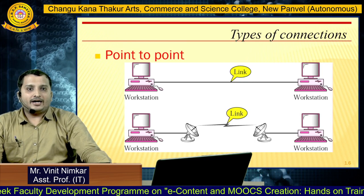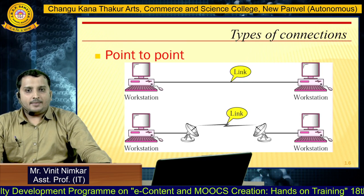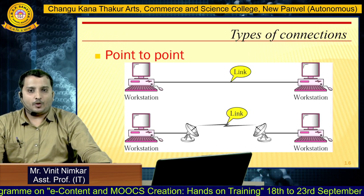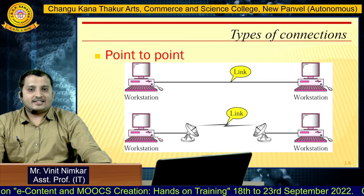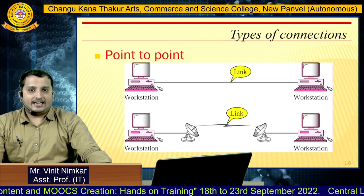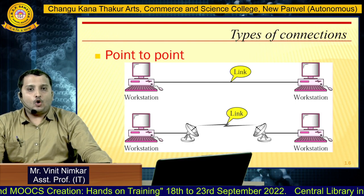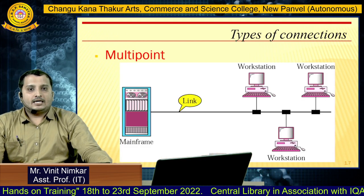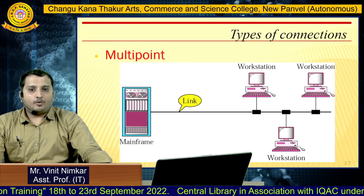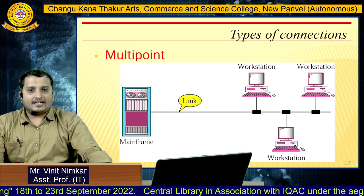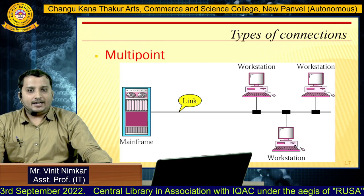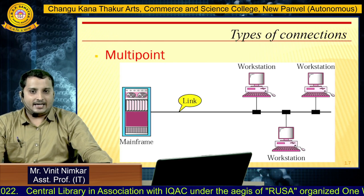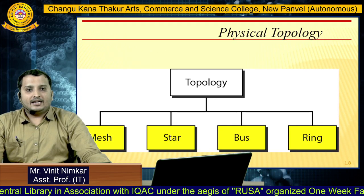Next, let's talk about types of connections. The first type is point-to-point. As we can see, in a point-to-point connection both devices are connected via a single link, and on this single link only two devices are connected — no other device is allowed. The second type is multipoint connection. In a multipoint connection, a single device can be connected to multiple workstations via a single link.